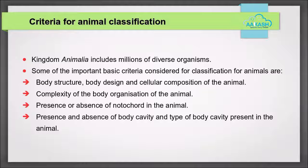Most of these animals are mobile and possess locomotory organs, except sponges. These animals can be free-living, parasites, or may live symbiotically with other organisms. The body design and cellular composition of the animal is one of the important bases considered for classification. Another criteria is the complexity of body organization, and the presence or absence of notochord in the animal.